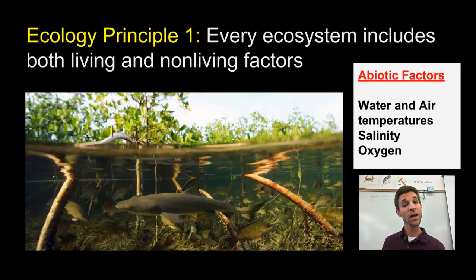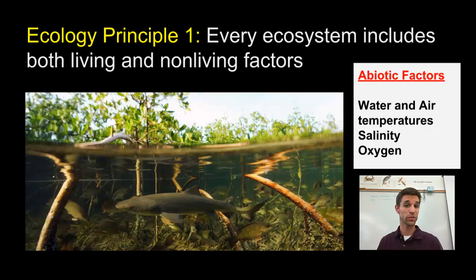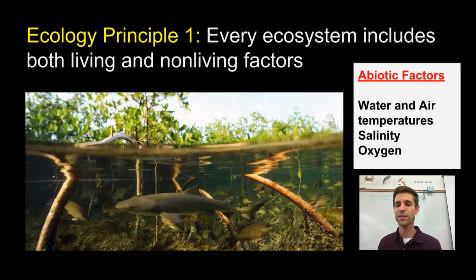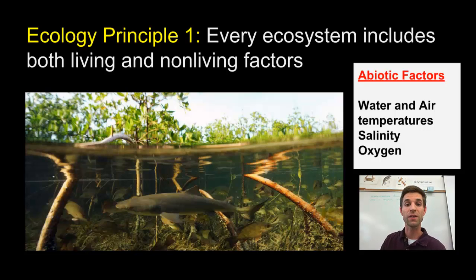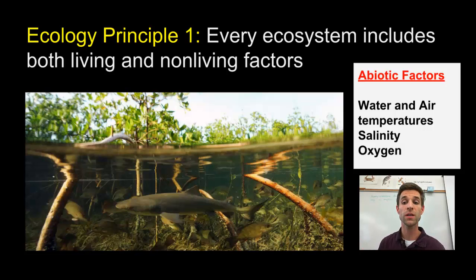The nonliving factors are called abiotic factors — things that are not living. In most ecosystems you're dealing with water, which is not living, and air made of gases that organisms breathe, also not living. The temperature of the water and the air, as well as their composition, affects how things interact in the ecosystem. In this mangrove case, the ecosystem is on the edge of the continent in the ocean, so you get salinity — these organisms are swimming in salt water — and nutrients like oxygen dissolved in the water, which the fish are breathing. Oxygen is a molecule; it is not living, but it is a nonliving factor that governs what goes on in the ecosystem. Living things are biotic factors; nonliving things are abiotic factors.